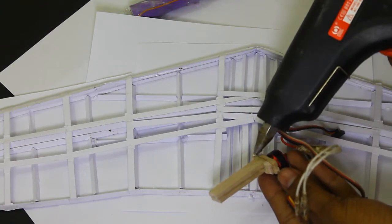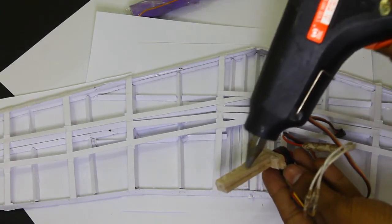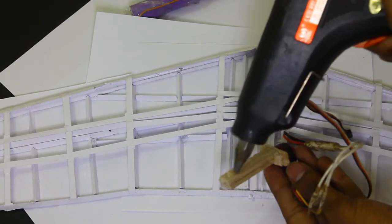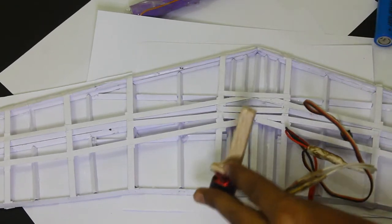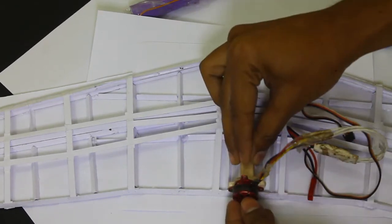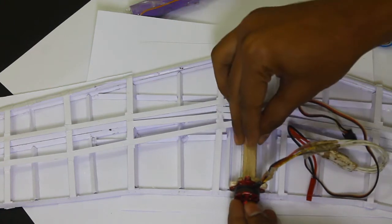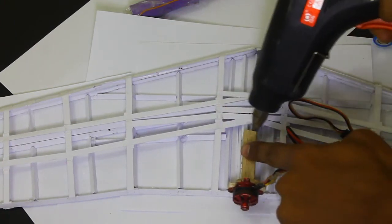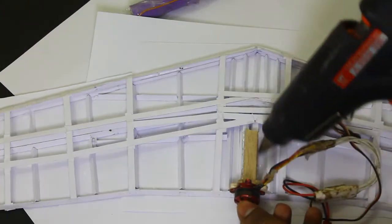We will start assembling our electronics by mounting our motor. So I am going to stick my motor using hot glue. And as I already explained, the place where I am going to place my motor is made of quite dense structure so that it can take all thrust load as well as vibration load.